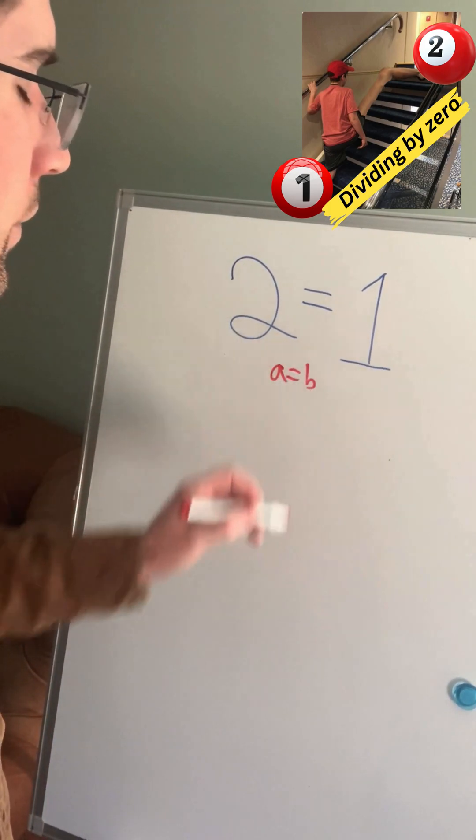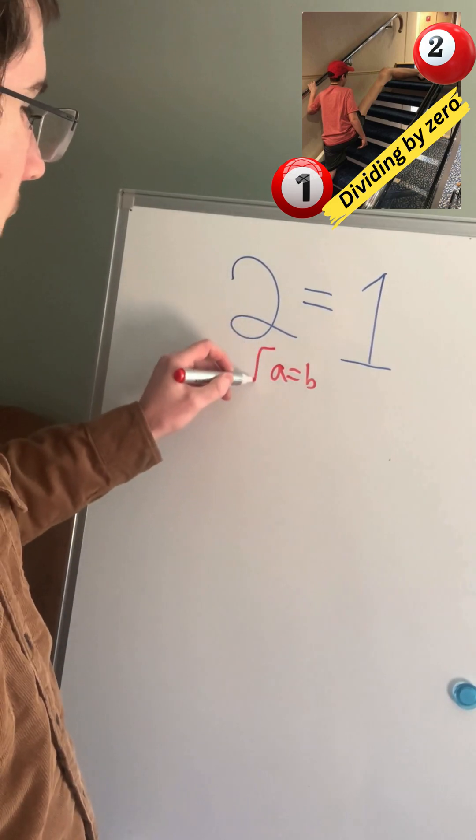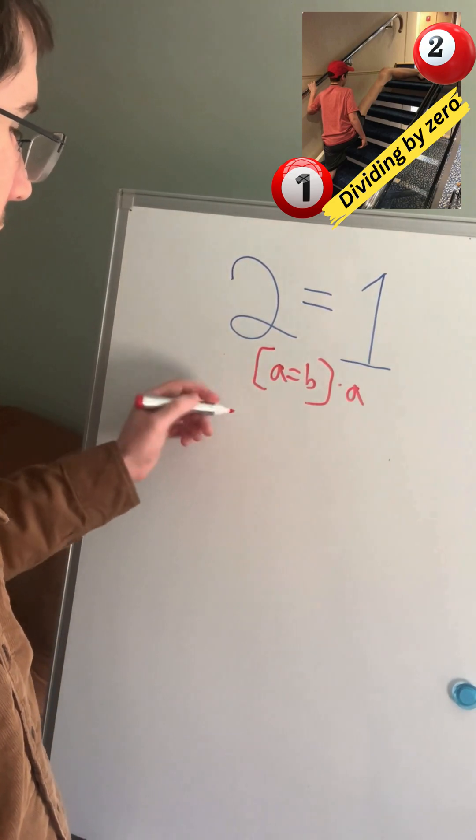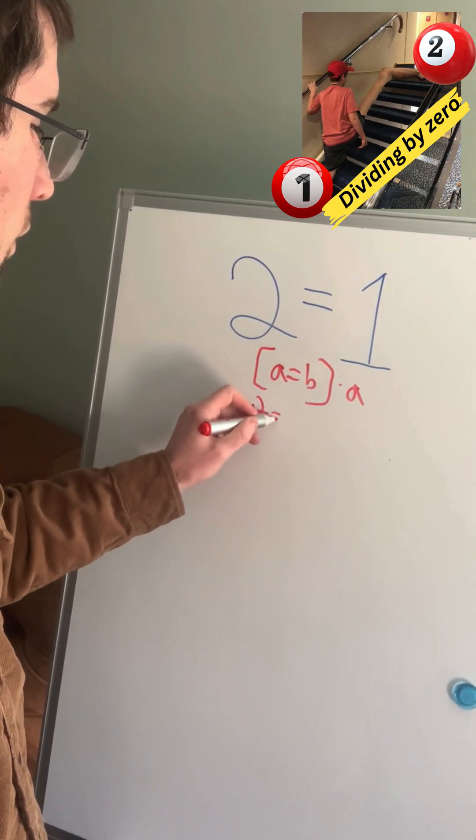We'll start off by saying A equals B, and then we'll multiply both sides of our equation by A. On our left-hand side, we'll have A squared equals AB.